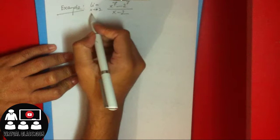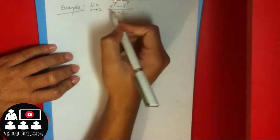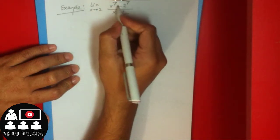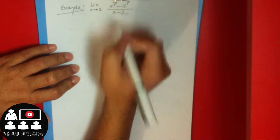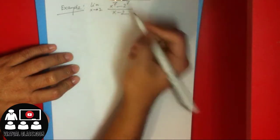I'm going to show an example. The limit as X approaches 2 of X to the power 7 minus 2 to the power 7, divided by X minus 2.